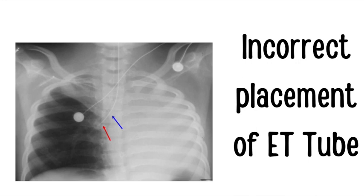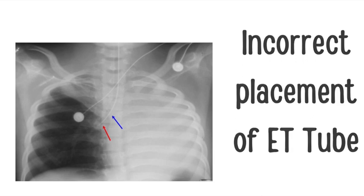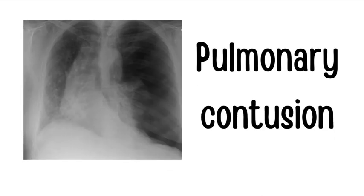We can identify incorrect ET tube placement by doing a chest x-ray, and on exam there would be unequal breath sounds on each side. Finally, pulmonary contusion: these patients typically present after a motor vehicle accident. Chest x-ray shows bilateral interstitial infiltrates and hypoxia — a classic white-out lung appearance. This is pulmonary contusion.